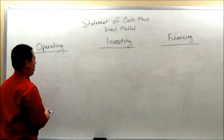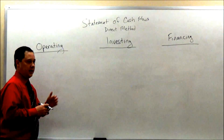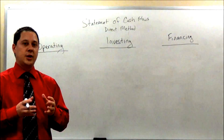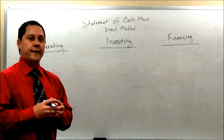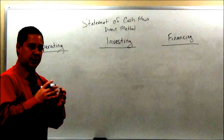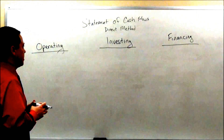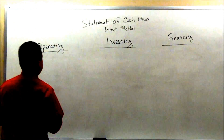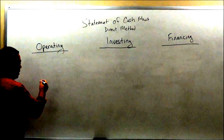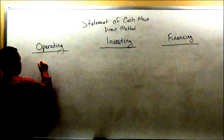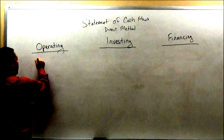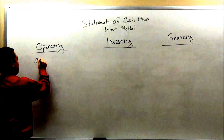Let me first start off with the operating activities. Remember, we're using the direct method. So if you watched the previous video, the statement of cash flows with the indirect method is different in a lot of ways. The direct method is a little simpler. The first thing we do is figure out what we have for cash received from customers.